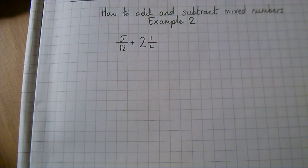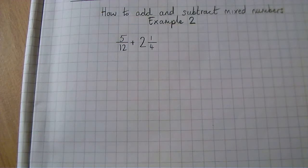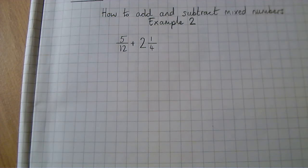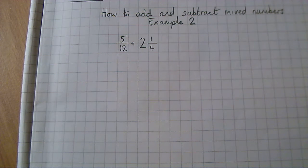How to Add and Subtract Mixed Numbers, Example 2. The first thing to say is that adding and subtracting fractions use the same method whether you're adding or subtracting. This example builds on the previous example so the method is exactly the same, except that at the end we'll be left with an improper fraction and we'll change that back to a mixed number, ensuring our fraction is in its simplest form. Let's look at our example.